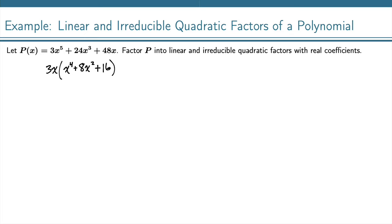What we're left with here is actually what we would call a quadratic form. If we do a little substitution to help you see it, we let u equal x squared, then that becomes u squared plus 8u plus 16.